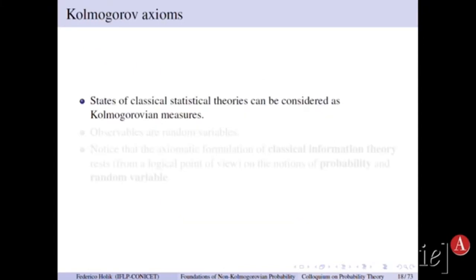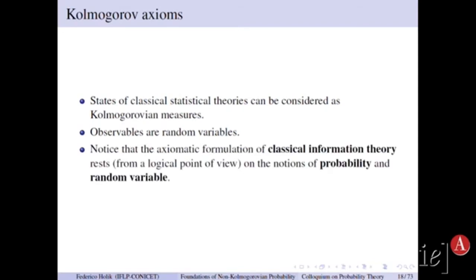So summarizing, states of classical statistical or probabilistic theories can be considered as Kolmogorovian measures, in the sense that I told you above. So observables will be random variables, like the one defined by the outcomes of a coin.